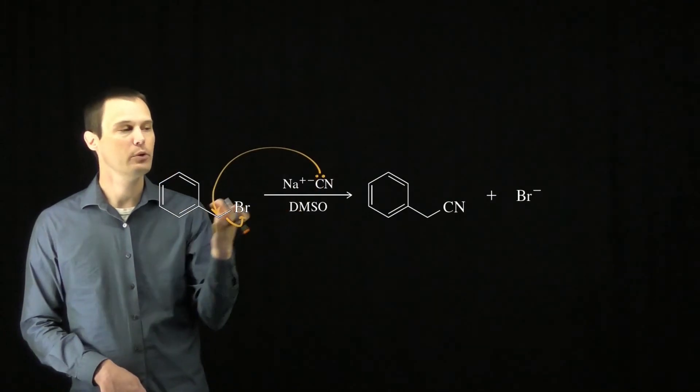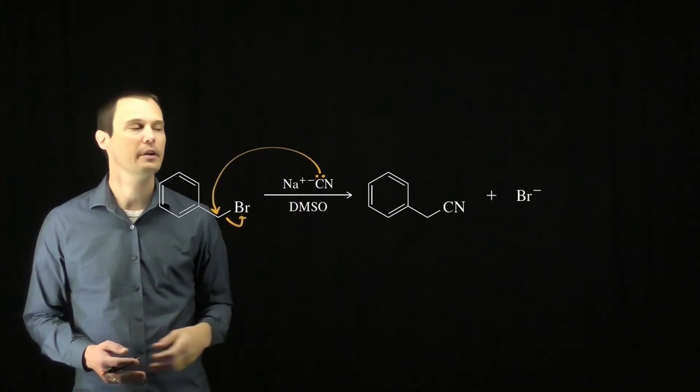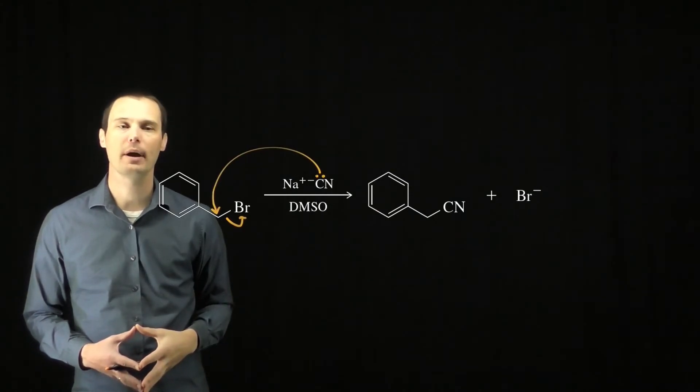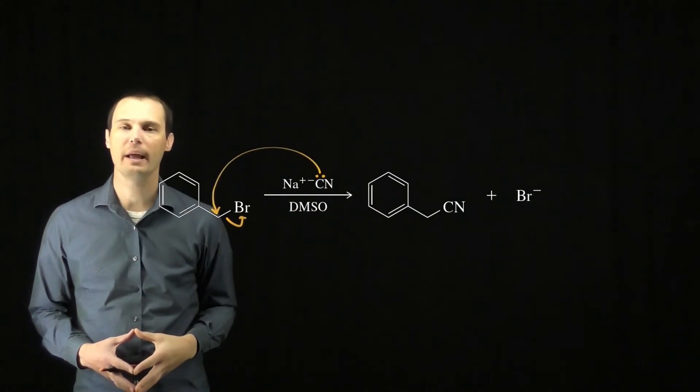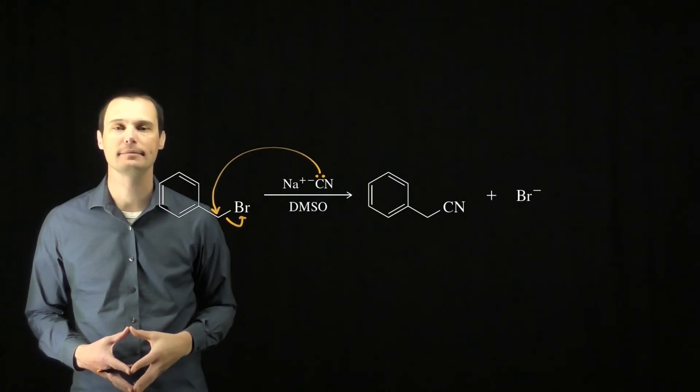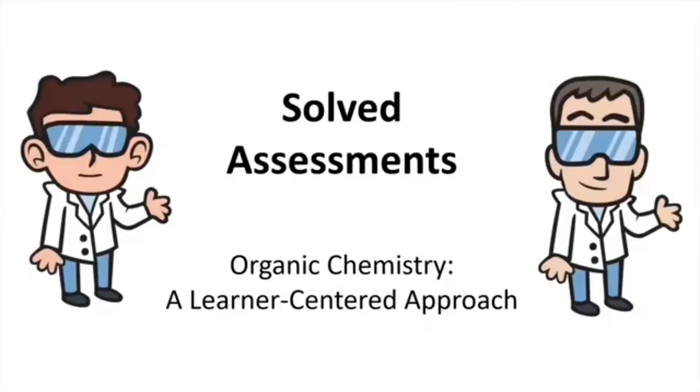That will form a new carbon-carbon bond between the electrophilic carbon and the carbon of the nitrile, forming our nitrile product and kicking out bromide as our leaving group. This is the mechanism for this SN2 reaction.